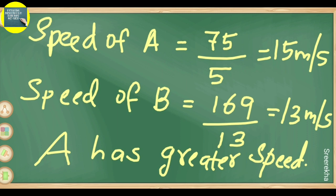Speed of B equals 169 meters divided by 13 seconds, which equals 13 meters per second. So Bus A has a higher speed at 15 m/s compared to Bus B at 13 m/s.